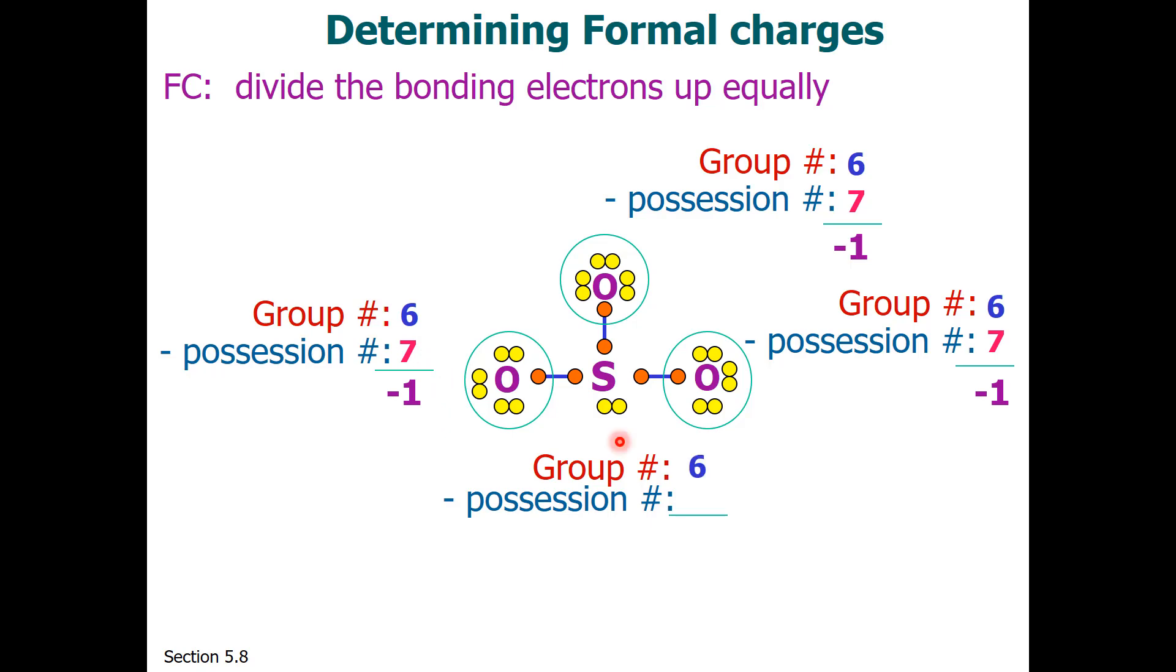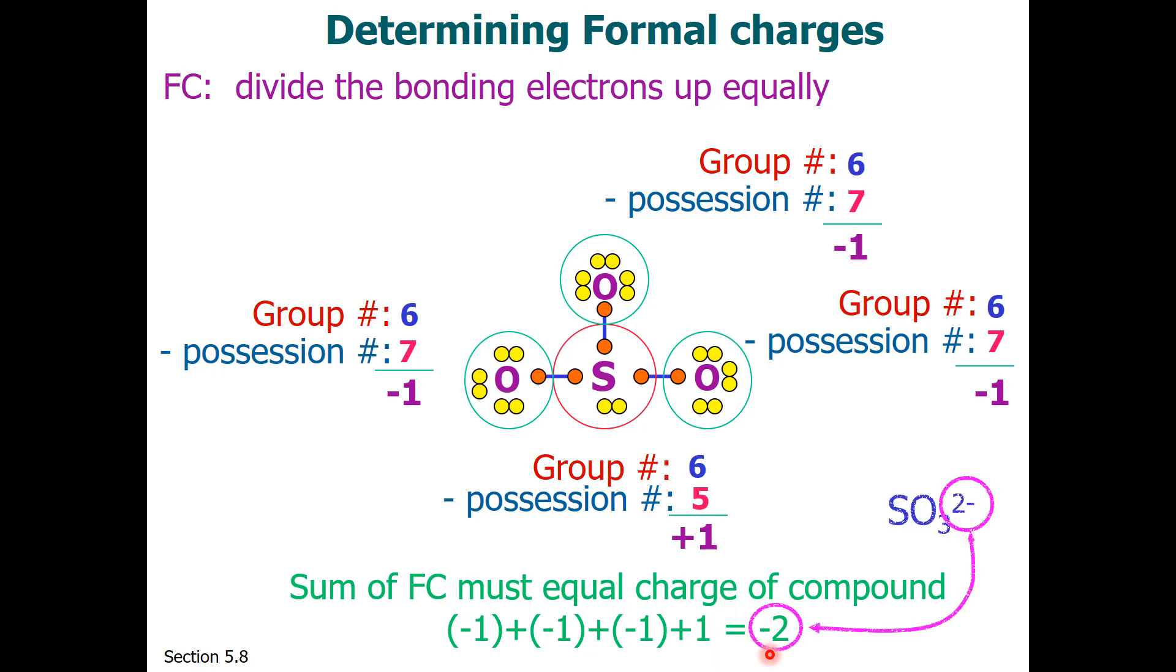Now about sulfur. Sulfur is in group 6. If we split the bonds equally, sulfur formally has access to 5 electrons. So sulfur is used to 6 electrons, but it has 5 in the valence. So it has a plus 1 formal charge. One other thing about the formal charge. The sum of the formal charge must equal the charge of the compound. So minus 1, minus 1, minus 1, plus 1 all adds up to minus 2, which is the charge on the sulfite ion.